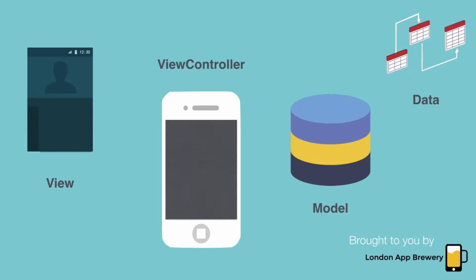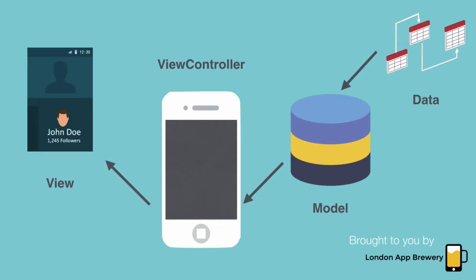Let's take a simple app such as a contacts app that manages all your contacts. When you open the app, the view controller will ask the model for the data of all your contacts — their phone numbers, their images, etc. The model grabs that data and passes it back to the view controller, which then decides how it should be displayed on the view, showing all the information in a nice, beautiful format.